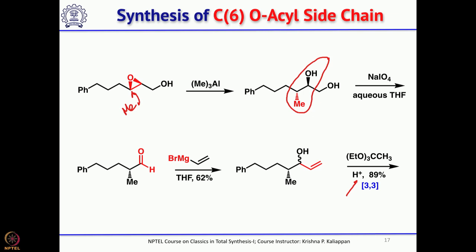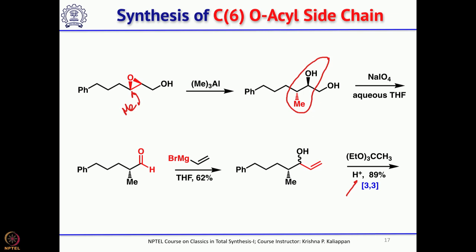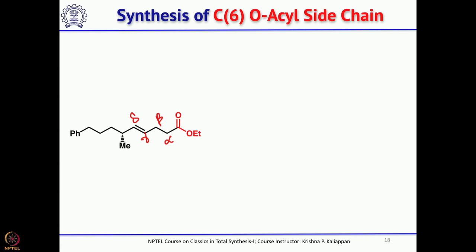Whenever you see a gamma-delta unsaturated ester, the Johnson-Claisen rearrangement should come to mind — and that is exactly the product here. Simple hydrolysis gives the carboxylic acid. All three fragments A, B, and C are now ready.